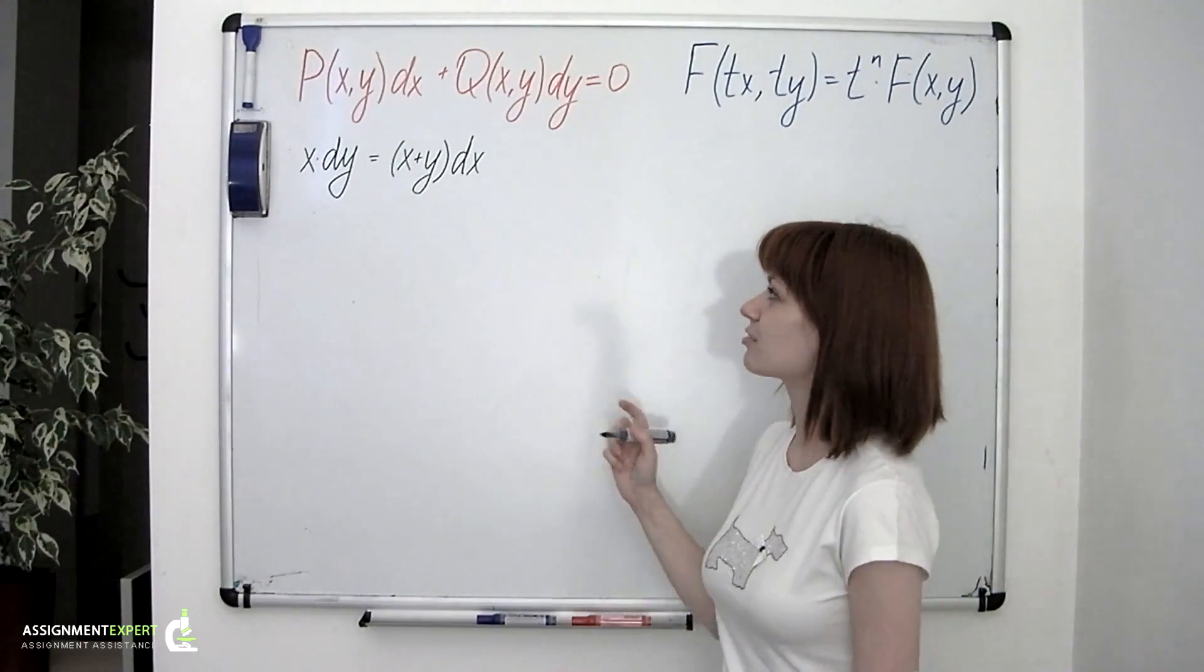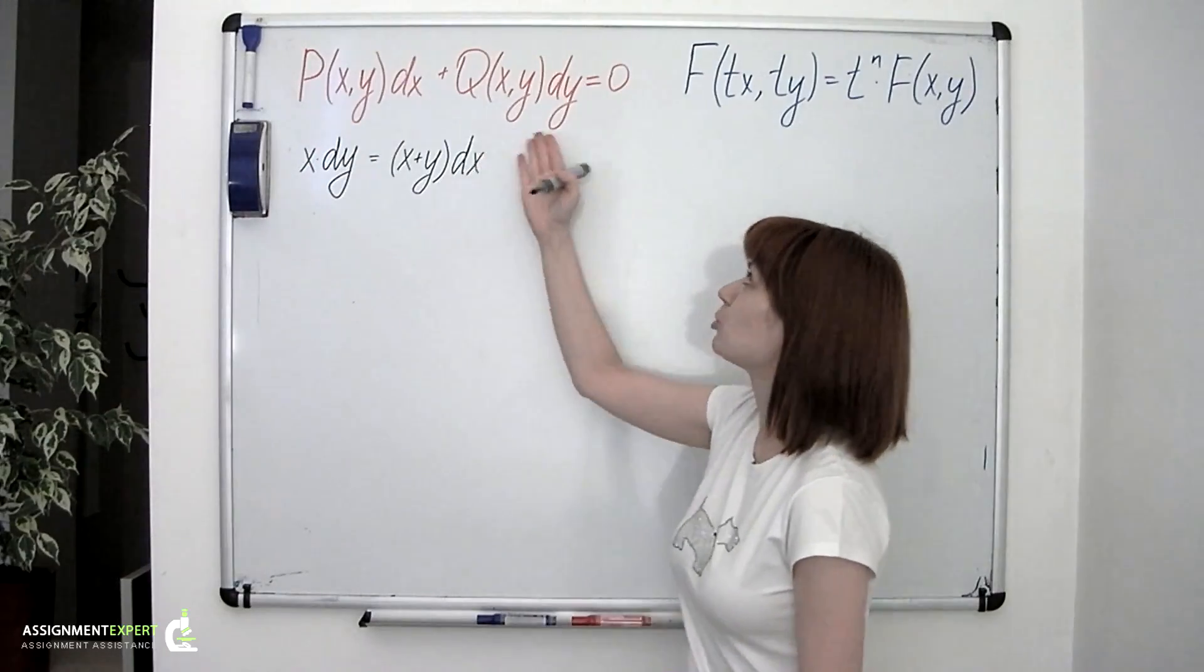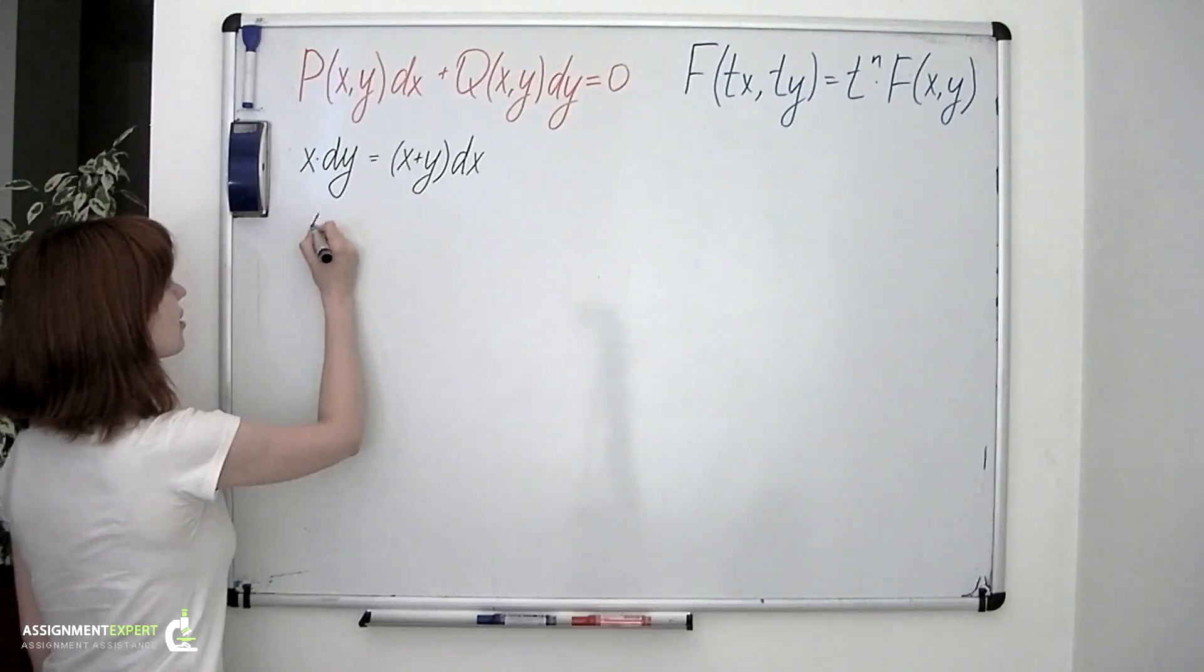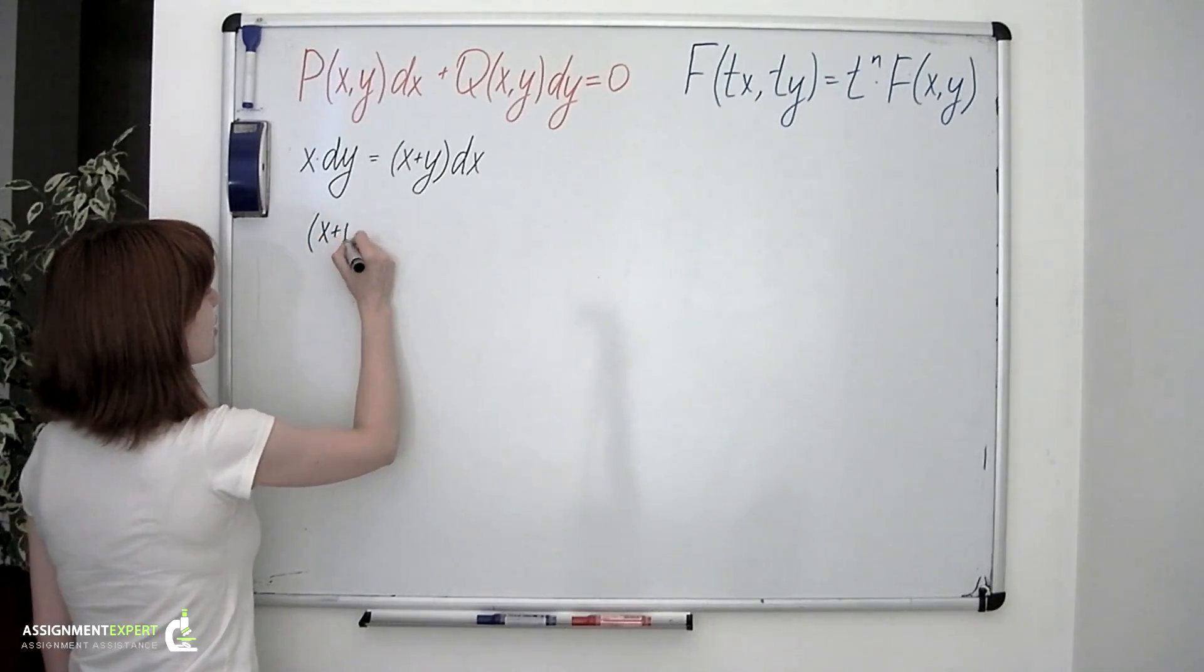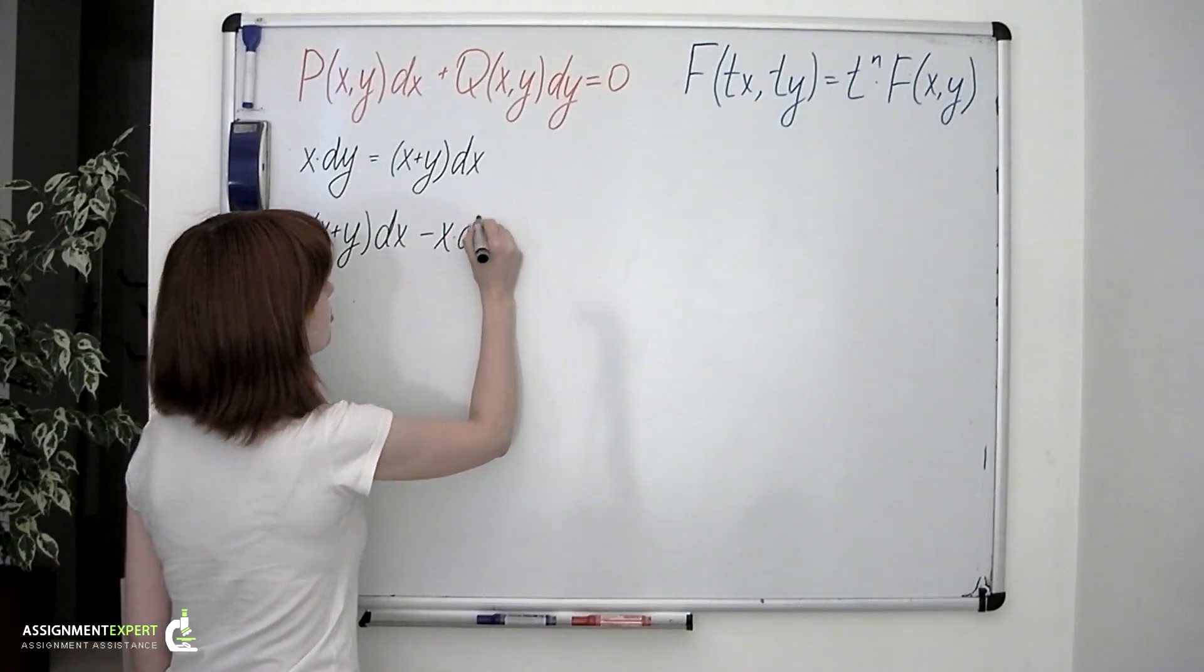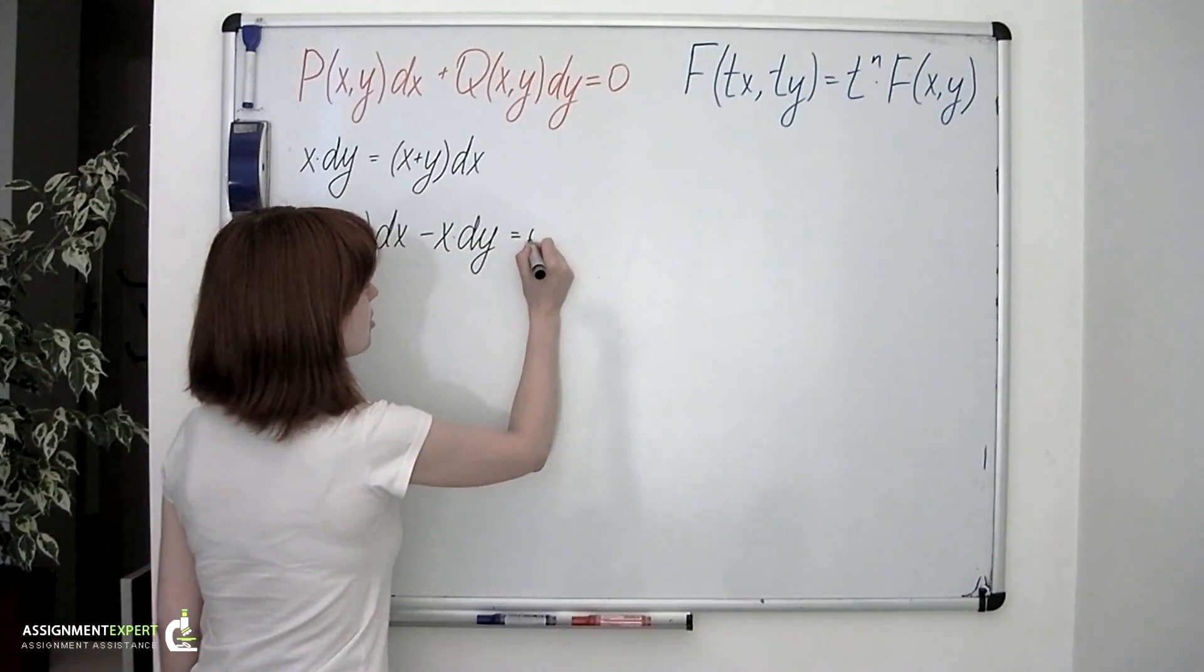Our first step is to write this equation in the form we have written in red. So we'll go x plus y dx minus x times dy equals 0.